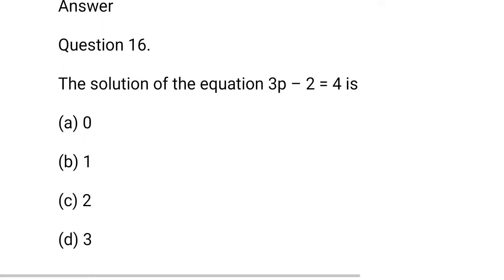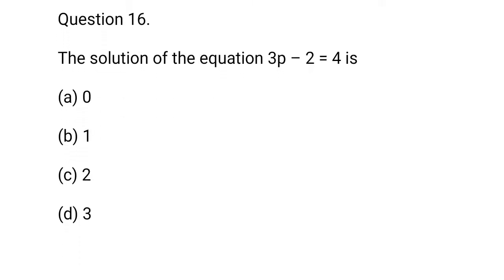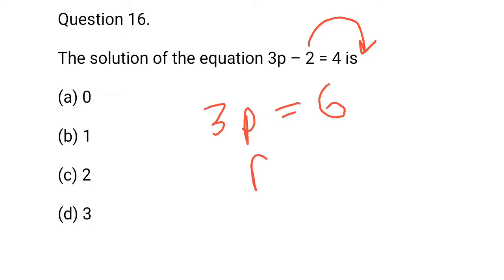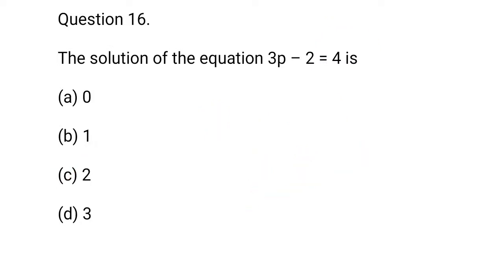Question 16: The solution of the equation 3p minus 2 is equal to 4. So, minus 2 goes to RHS and becomes plus. So, 3p will be equal to 6. p will be equal to 6 upon 3, that is 2. c option is correct.